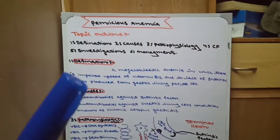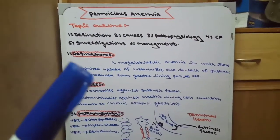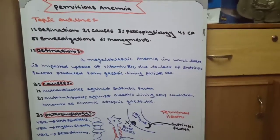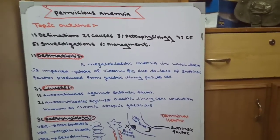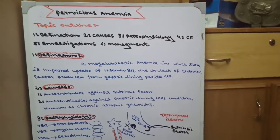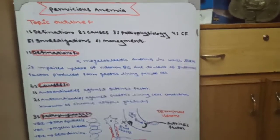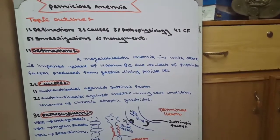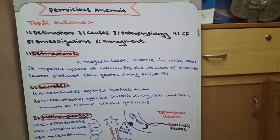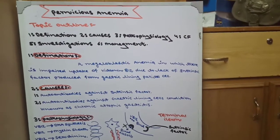First of all, we will start with pernicious anemia's definition. The definition is that pernicious anemia is a megaloblastic anemia in which megaloblasts are formed - large-sized cells are formed.